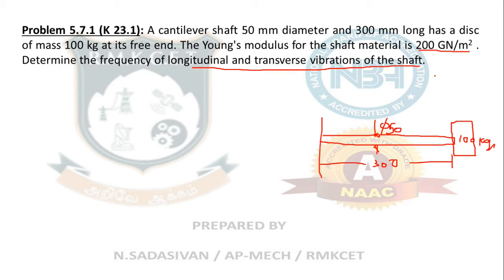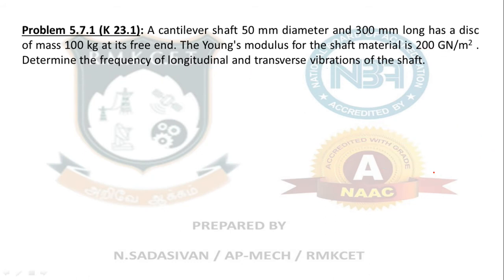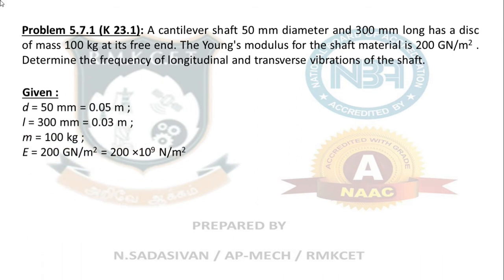For longitudinal vibration, you have to find out the extension of the length of the shaft. For transverse vibration, you have to find out the downward deflection of the shaft. Both are not the same — have it very clearly in your mind. When you are reading from a book, you will get this conclusion first.